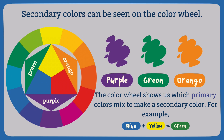Secondary colors can be seen on the color wheel: purple, green, and orange. The color wheel shows us which primary colors mix to make a secondary color. For example, blue plus yellow makes green, yellow plus red makes orange, and red plus blue makes purple.